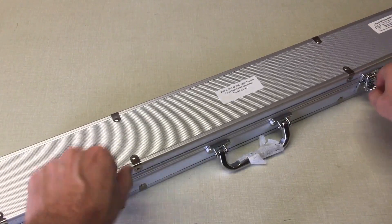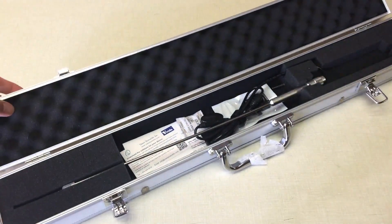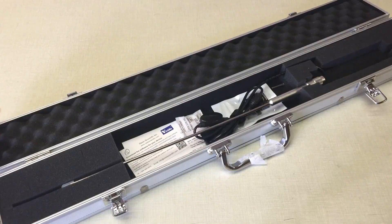The GB Series Boroscopes all come in an aluminum hardshell carrying case for protecting and storing your scope.